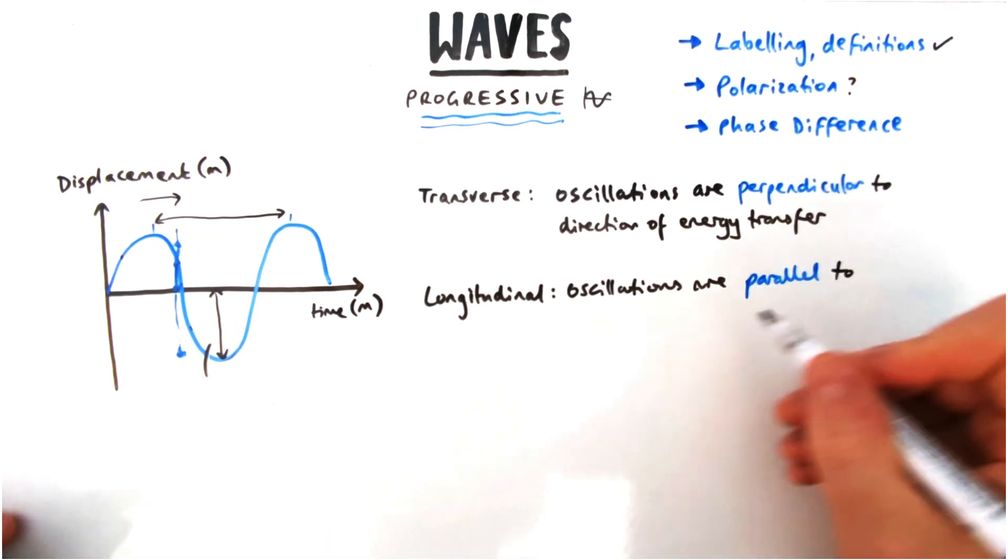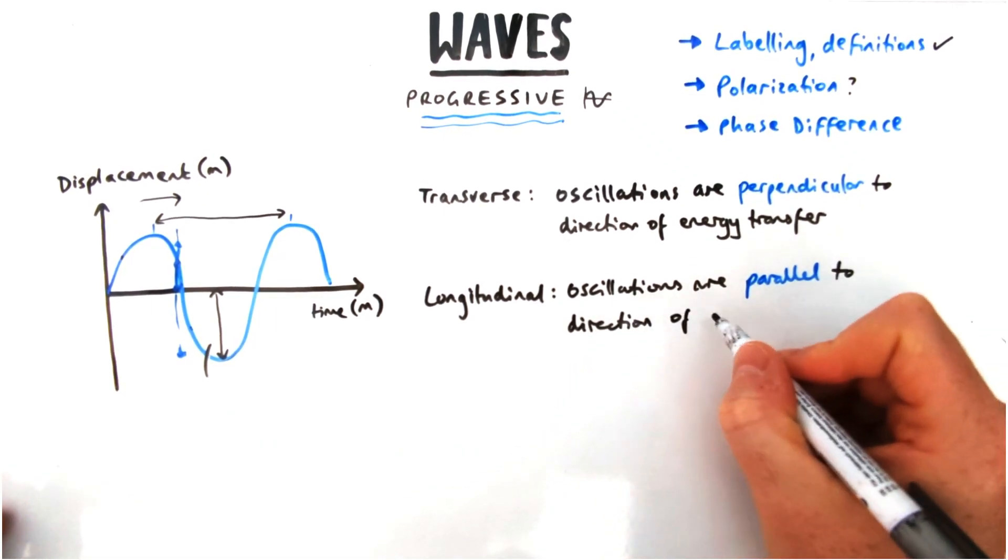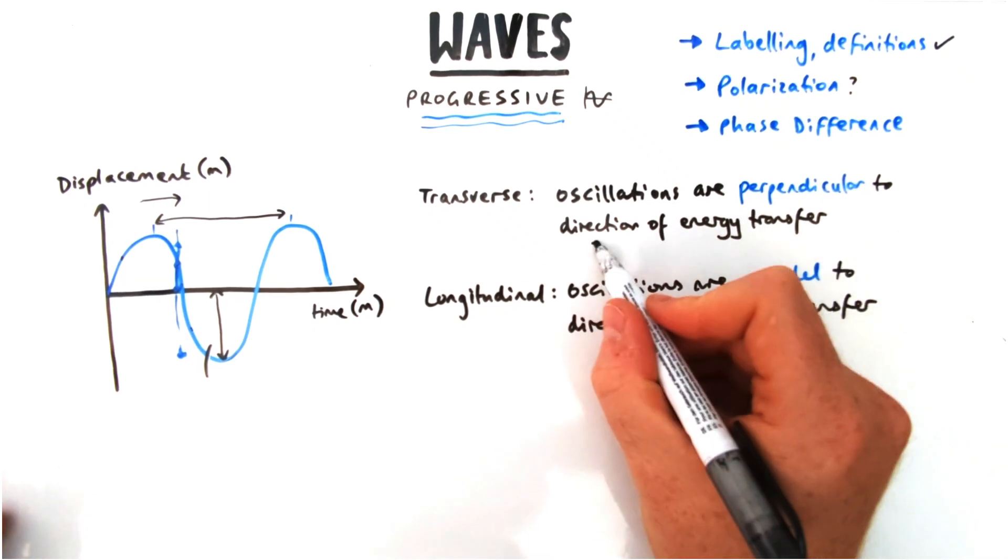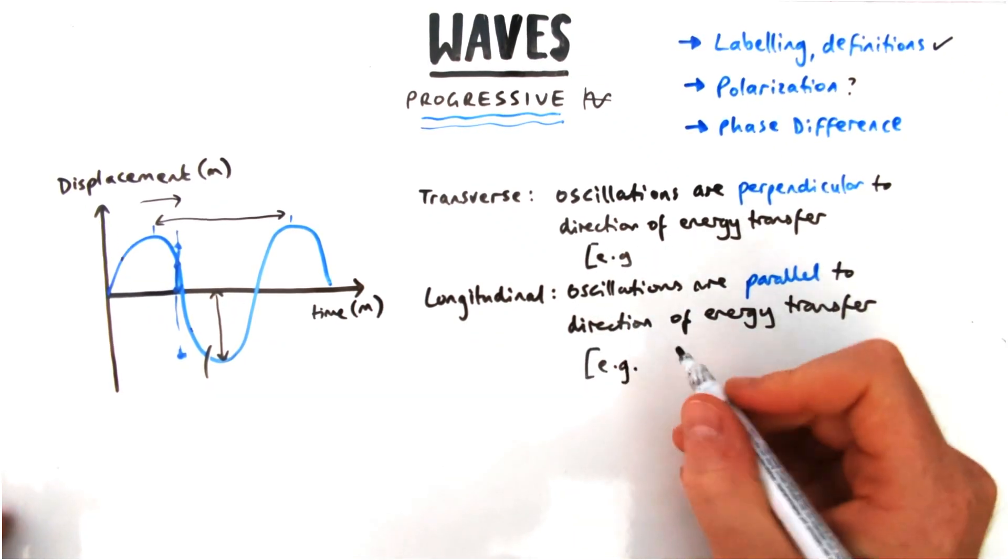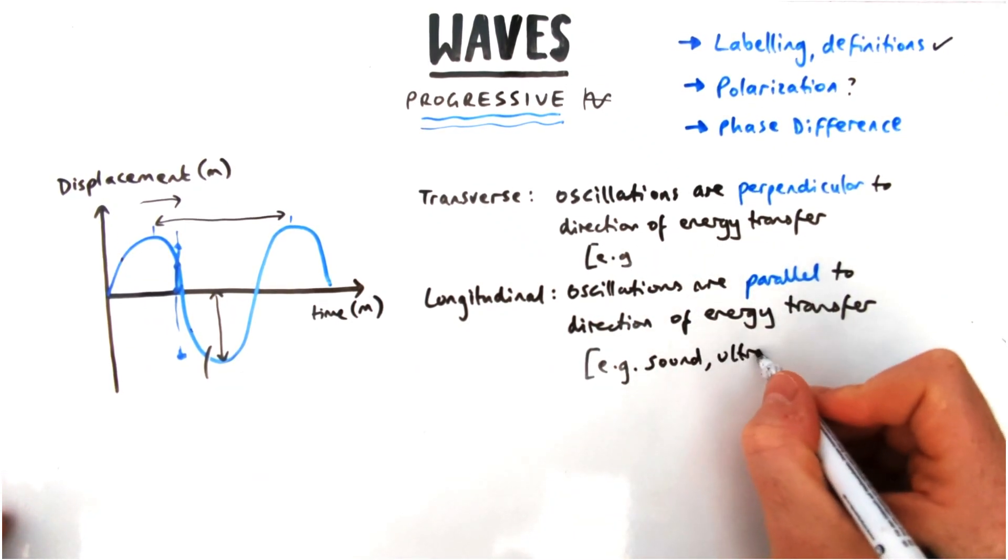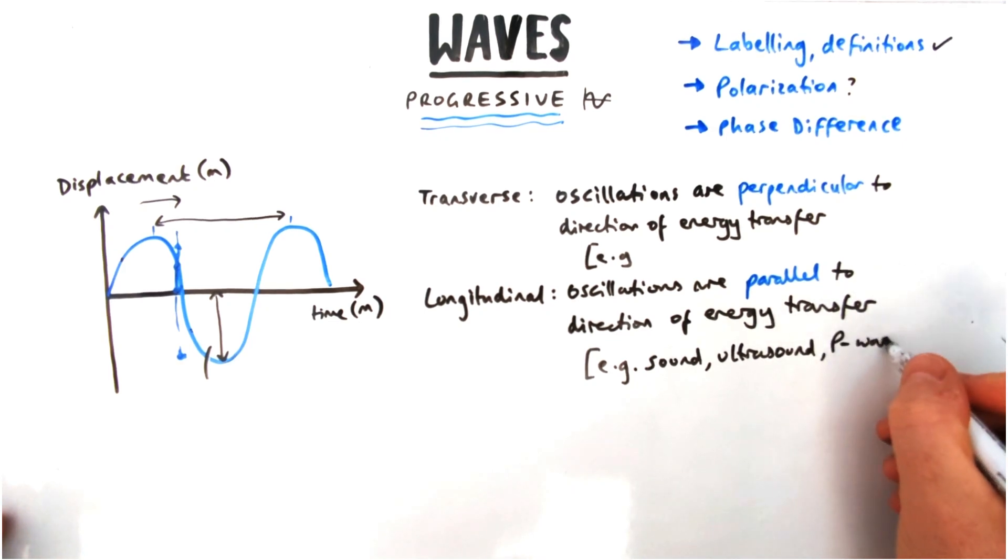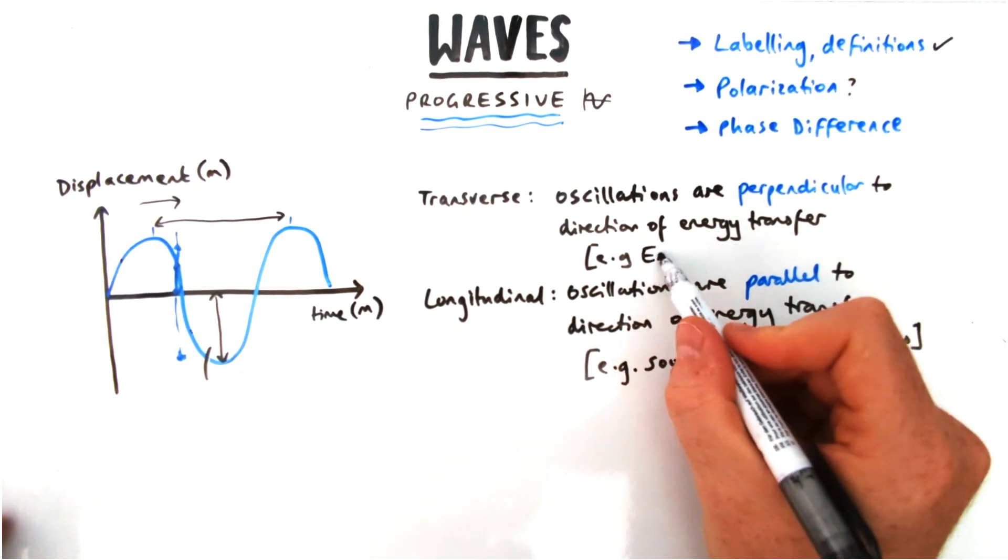You do need to know some examples for each of these as well. Examples of transverse waves tend to be light and anything on the electromagnetic spectrum. Longitudinal, there's less of them example-wise, but you've got sound, ultrasound, p-waves for earthquakes and that kind of thing.